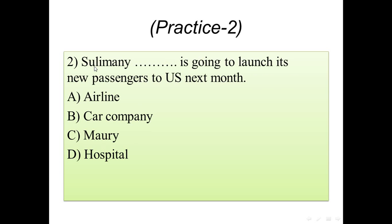Practice number two: Sulaimani blank is going to launch its new passenger service to the US next month. Options: A) airline, B) car company, C) Maori, D) hospital. The right vocabulary is 'airline', because Sulaimani airline is going to launch its new passenger service from Sulaimani to the US next month. Only an airline carries passengers from one place to another.